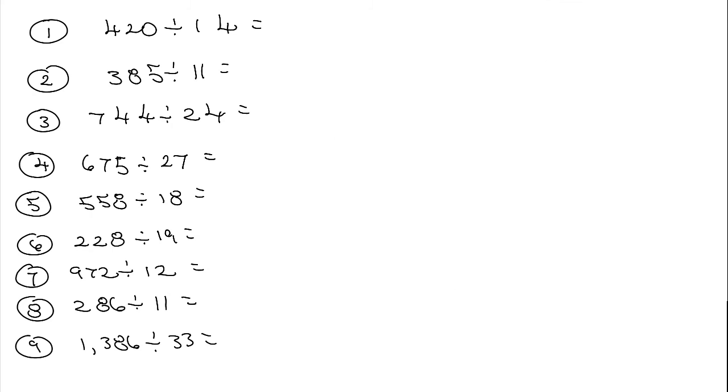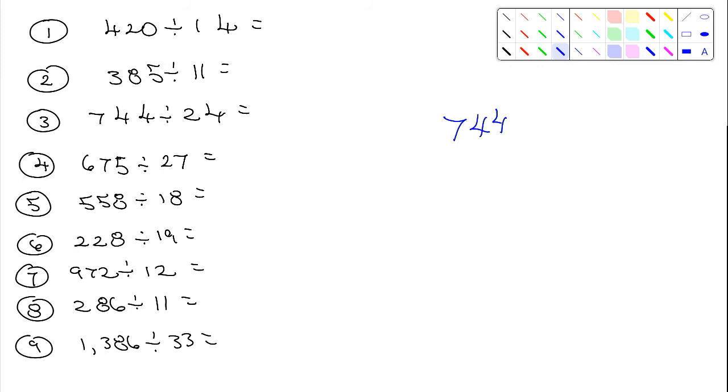All right, I'm looking at number three. It's 744 divided by 24. Now I have to figure out how many times, because 24 won't go into 7, but it will go into 74. So 24 plus 24 is 48, that's pretty easy. That's still a ways from 74.